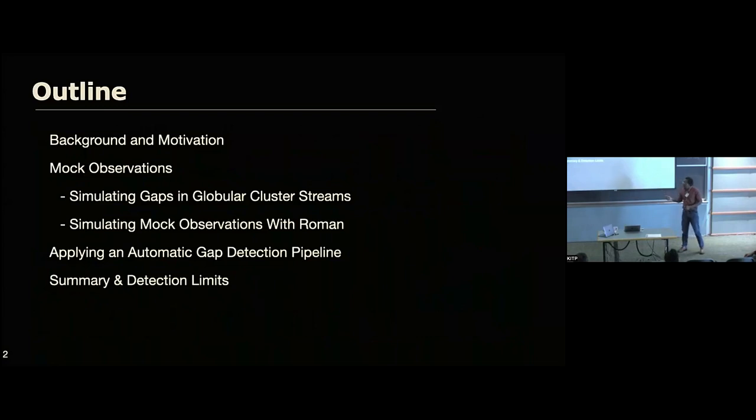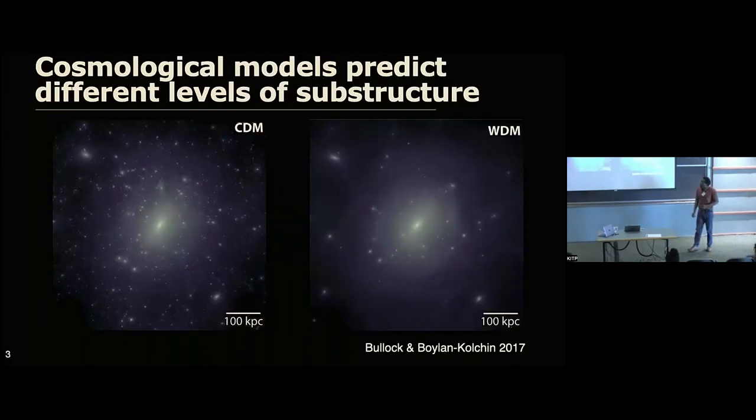So just a little bit of an outline. I'm going to talk about the background information about this, why we're doing this, and then talk a little bit about simulations of streams and gaps, and then how we use an automatic tool that Gabi Contardo came up with. So the motivation is that we know that large cosmological simulations that use dark matter predict different numbers of subhalos, depending on the model of dark matter that they use.